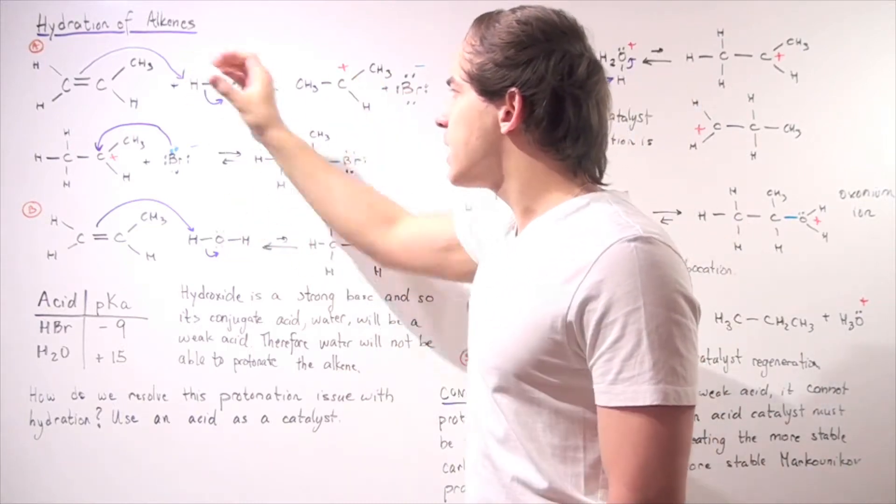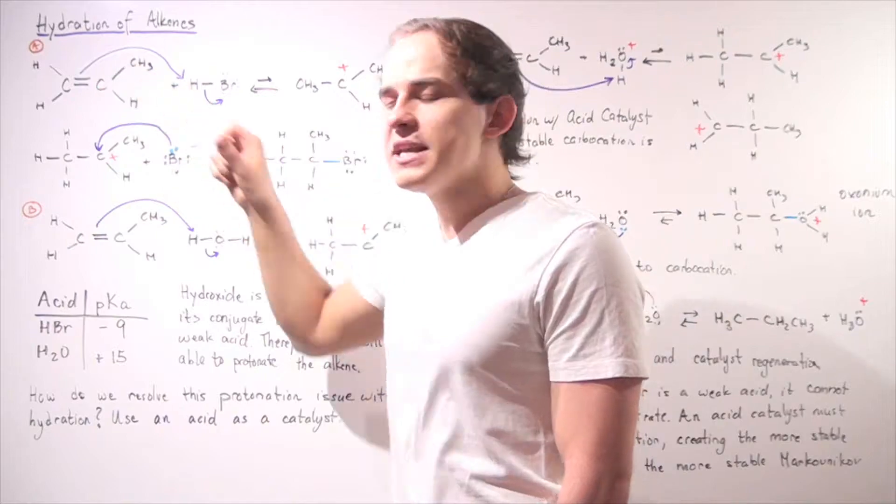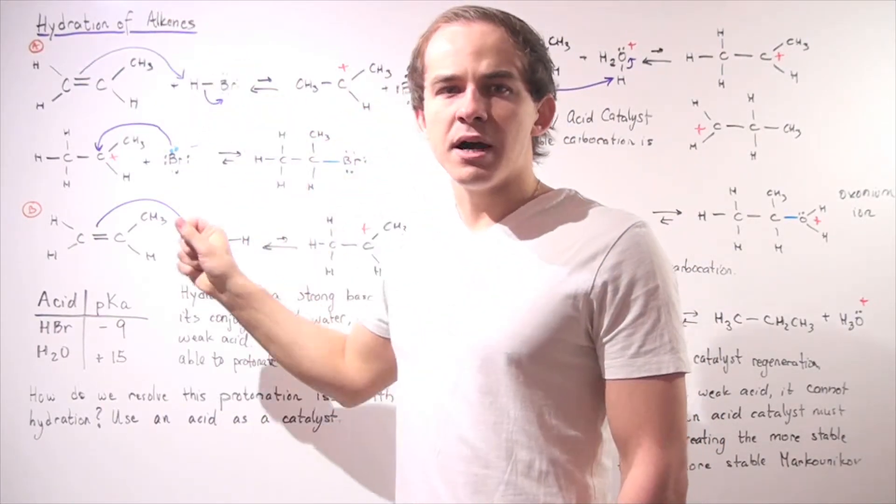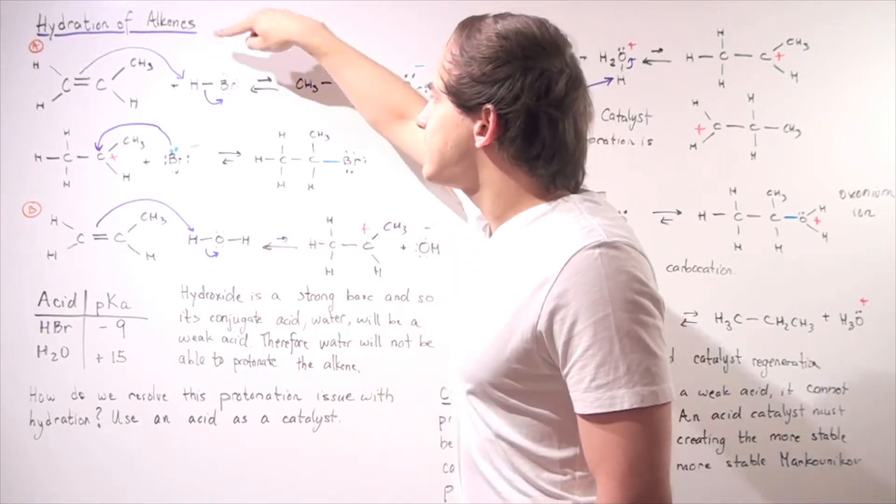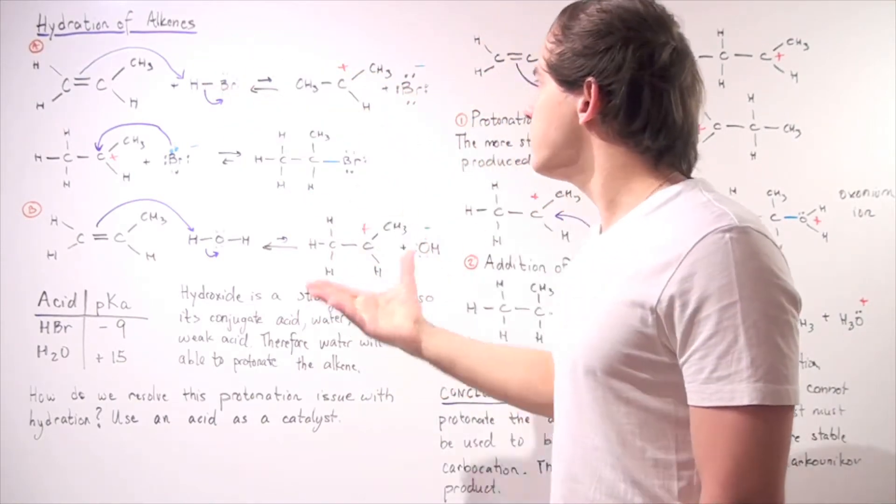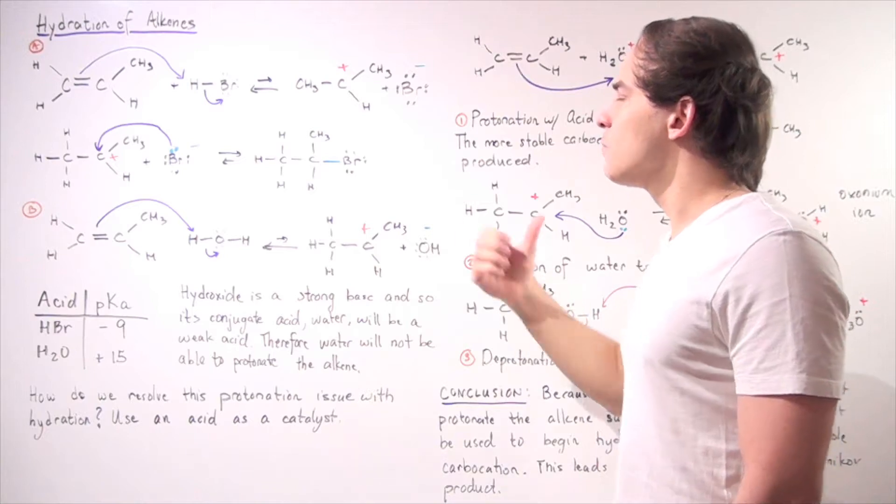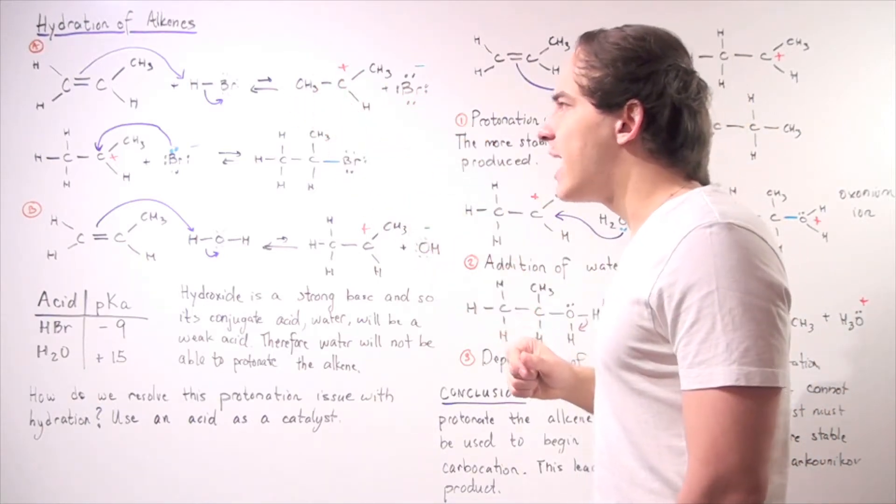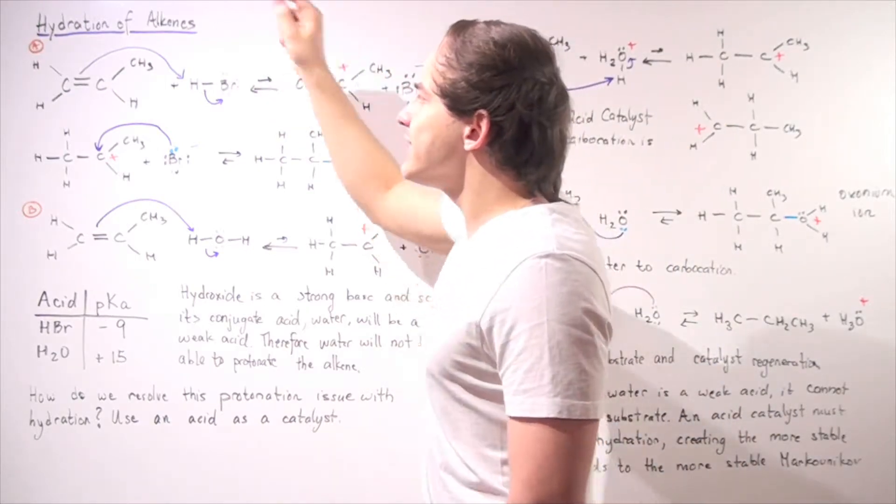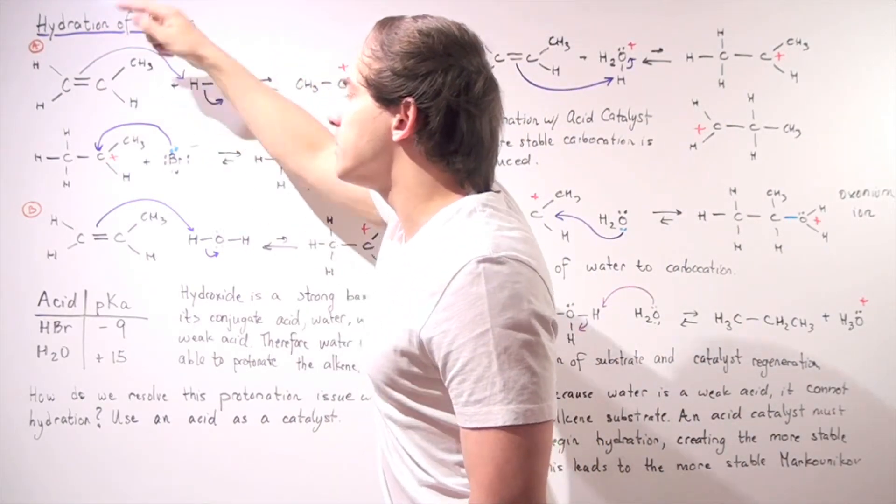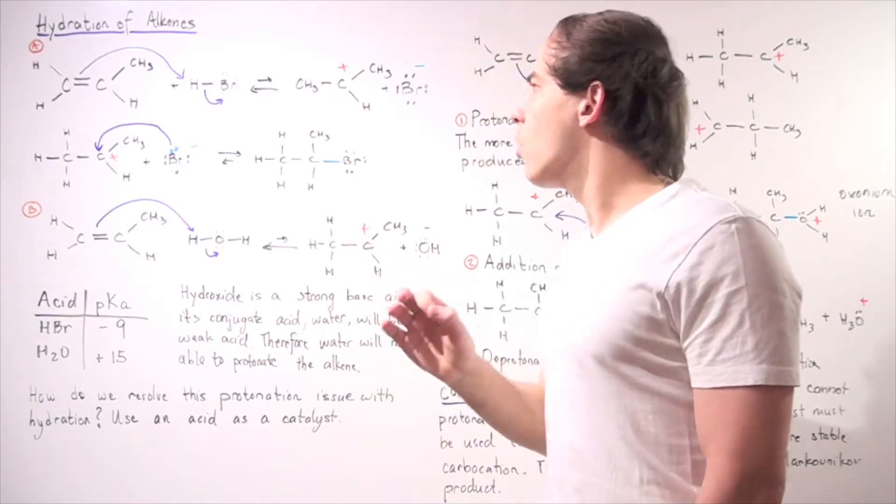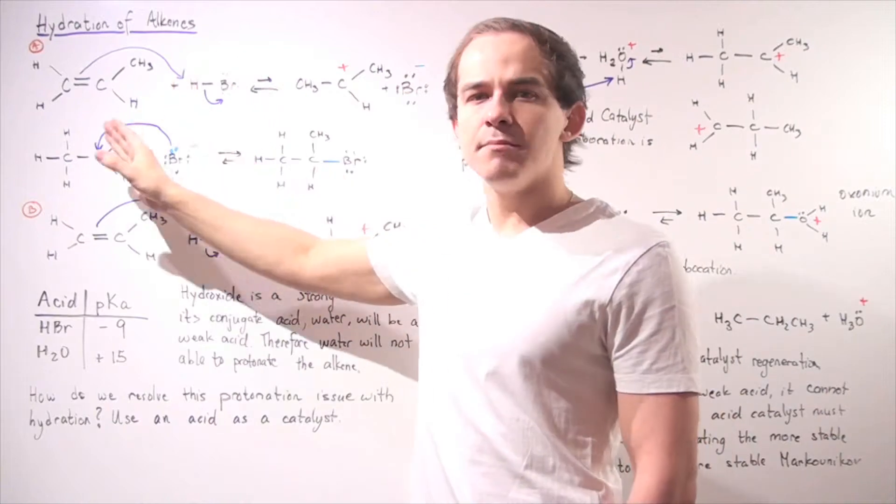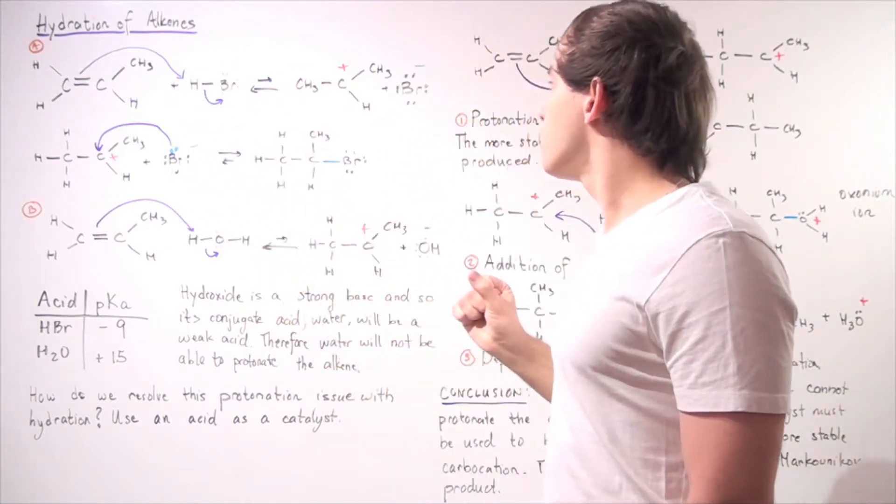So our reaction is known as hydrohalogenation. And in the first step, we have the protonation of this alkene. What happens is, the pair of electrons in the pi bond of the double bond attacks this H, displacing this bromine, forming the following two products: our carbocation intermediate and our bromine anion. So notice the H goes onto this carbon and not this carbon because we want to form the more stable secondary carbocation and not the less stable primary carbocation.